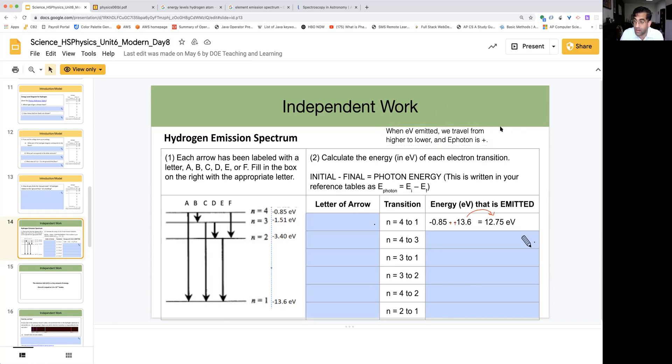On the other hand, as we'll see, when electron volts are absorbed, travel, or an electron travels lower to higher, and the energy of a photon is negative. And you'll see that as well.